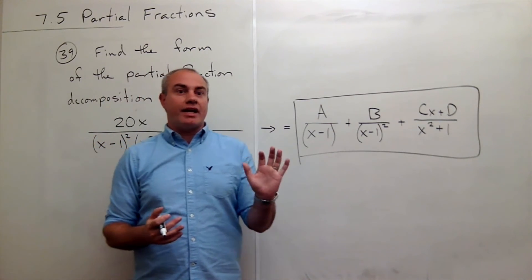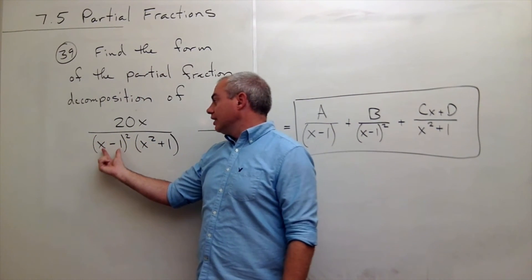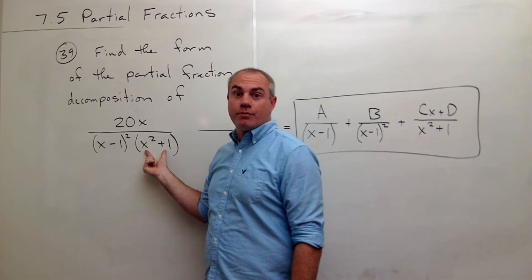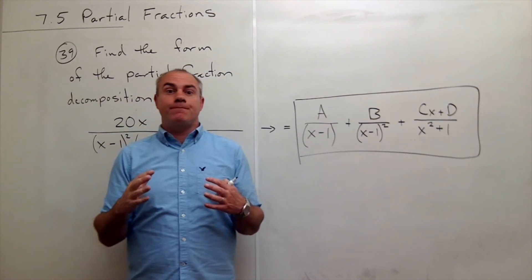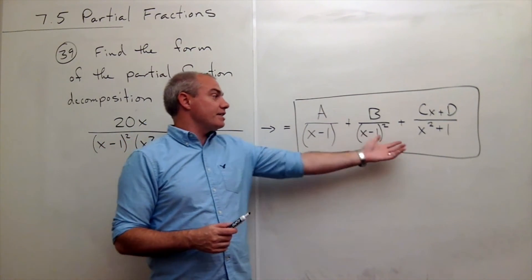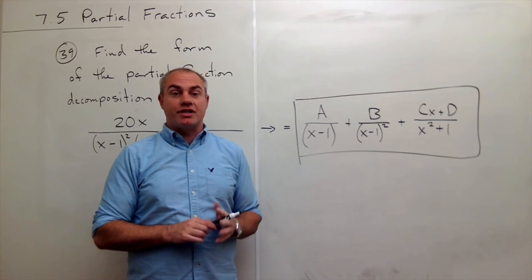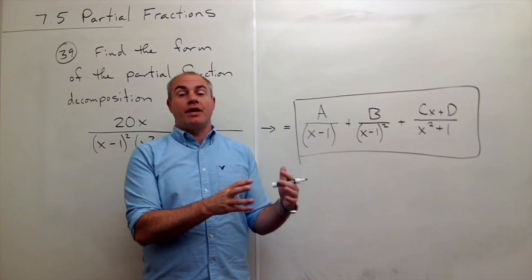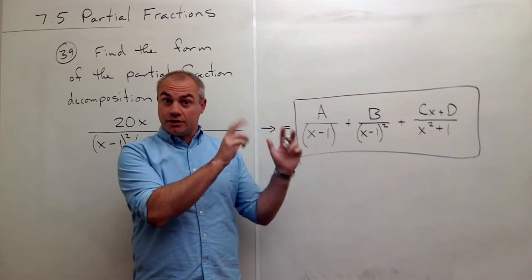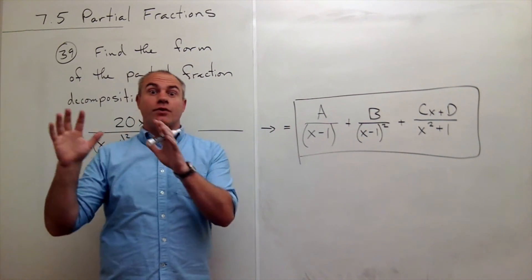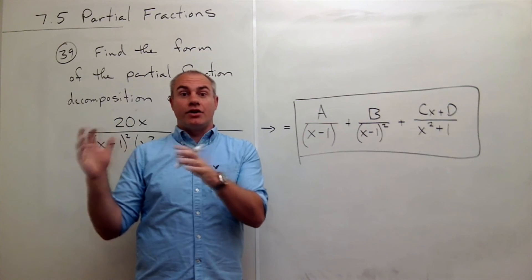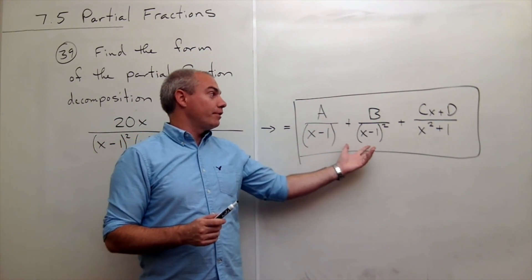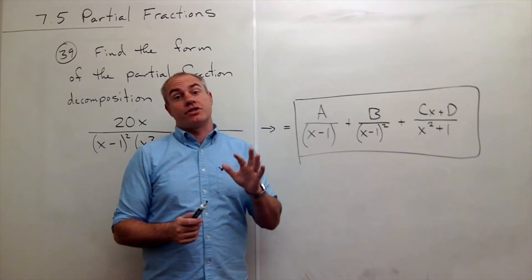But it's really important for us to realize, when am I looking at a linear term? Now, this just happens to be a linear squared, and this is an irreducible quadratic. If you can keep the two straight, it's very easy to set up this partial fraction decomposition. If you're confusing the two, and you're not sure when am I living in the linear factor world, and when am I living in the irreducible quadratic factor world, then it's very hard to set up partial fraction decomposition, so just be careful with that.